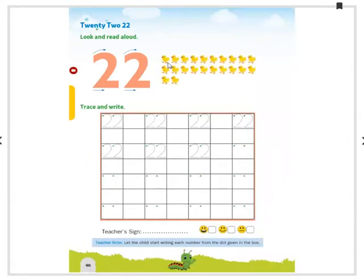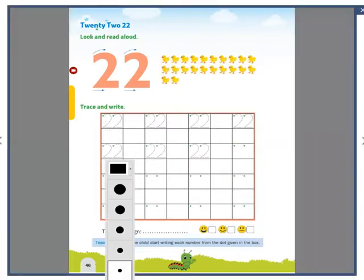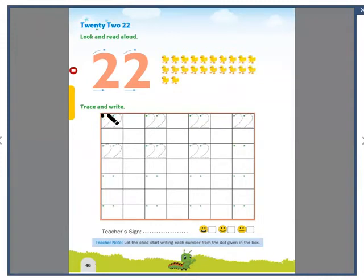Here also the same chicks. But here two chicks are added. So it is 22. Similarly trace out the numbers 22 in the given boxes. Here also they have to trace from the dot they have given. 2, 2, 2, 2. You have to read and then you have to write. You have to read and then you have to write it.